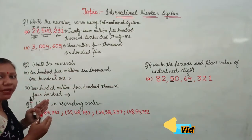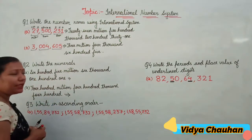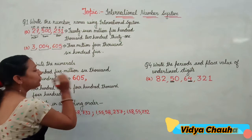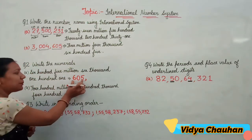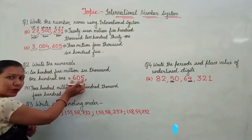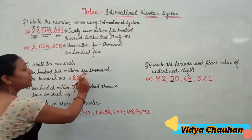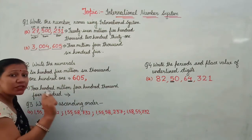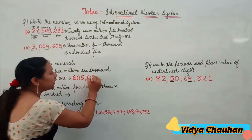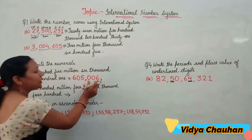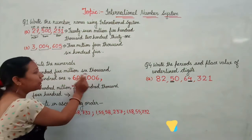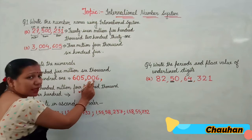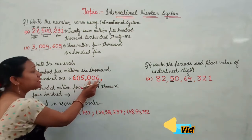So we write 605 in the millions group and put a comma to separate it. This is our millions period. Then moving forward, we have 6,000. In the thousands group there is only 6, meaning the hundred-thousands and ten-thousands places are filled with zeros — so it becomes 006 in the thousands group, giving us 6,000.